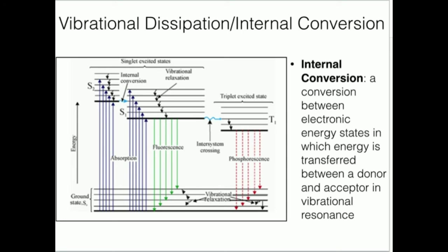What is internal conversion? Internal conversion is a conversion between electronic energy states in which energy is transferred between a donor and acceptor in vibrational resonance. That's a fancy way of saying that it's a transfer of energy between two different electronic energy states that are really close to energy. This blue line that goes completely horizontally from left to right represents internal conversion. You're getting a switch or a conversion between electronic energy states.